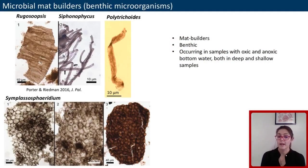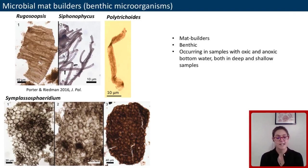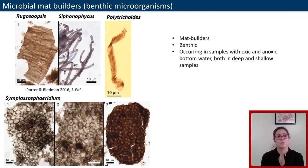Out of the Chuar assemblage, prokaryotes are quite common. There are several filamentous and cell-aggregate taxa, like rugosopsis and polytricoides, generally interpreted as components of benthic microbial mat. So we have an idea where these guys lived — they can provide some orientation about what is going on at depth. And they're usually isotopically very light, consistent with isotopic depletion at depth.